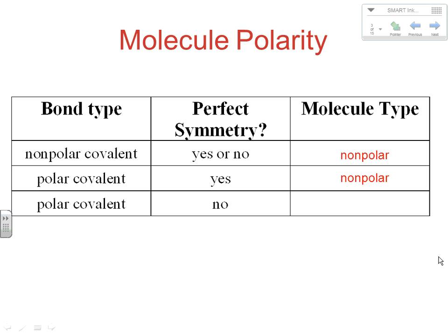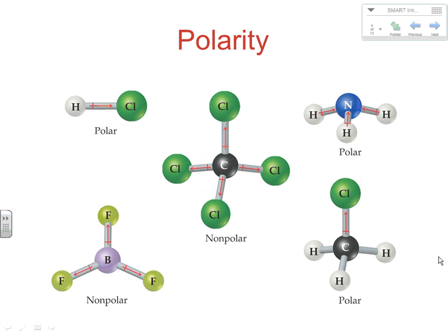Whereas with polar covalent bonds and no perfect symmetry — as we saw with water — you do get a polar molecule. So you have to evaluate both bond type and symmetry. When you have a two-atom molecule, the polarity of the bond is the polarity of the molecule. So if we have polar bonds in HCl, it's going to be a polar molecule. But in other situations, you really have to evaluate both the shape and the bond type.